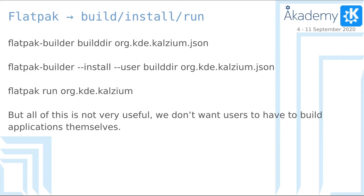Once you've written your manifest, you want to build it, install it, and run it as a developer. For that, you use Flatpak Builder. If you just give it a build directory and the manifest file, it will build it. You want to install it as a user so it doesn't ask for the root password. And then once you have installed it as a user, you can just run it and test that it works. But this is for developers — for users, we don't want them to have to build everything, because this is supposed to be the future of applications on Linux. Building is not the future.